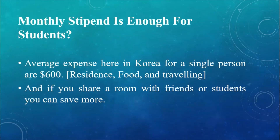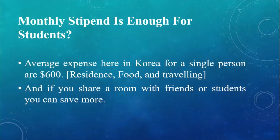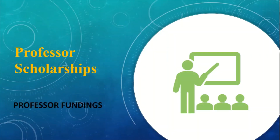If you share a room with a friend or another student, you can save much more. For example, if a single student is living in a room with kitchen and bathroom, the rent is generally three hundred to three hundred fifty dollars. If you share this with another student, you pay half that amount, so you can save the other half or spend it for another purpose.